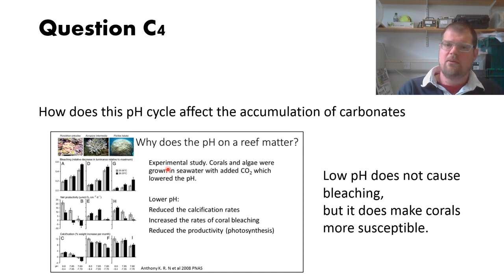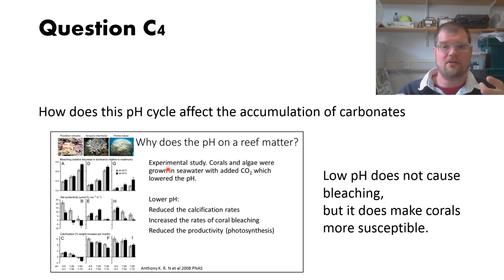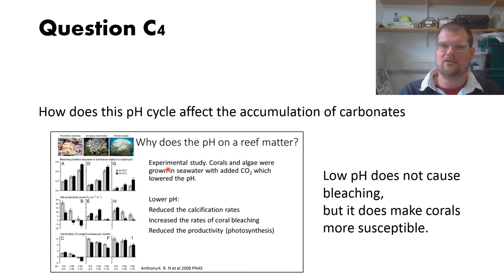Quite a few people mentioned bleaching, sometimes correctly, sometimes incorrectly. Corals do bleach, but the reason is not because the ocean has locally acidified through the day-night cycle — it's usually because of temperature, it gets too hot. However, pH is important in that local acidification can increase the susceptibility of the corals to bleaching. You had to acknowledge that temperature is the primary driver of bleaching, and pH is a compounding effect that increases the likelihood rather than being the primary cause.